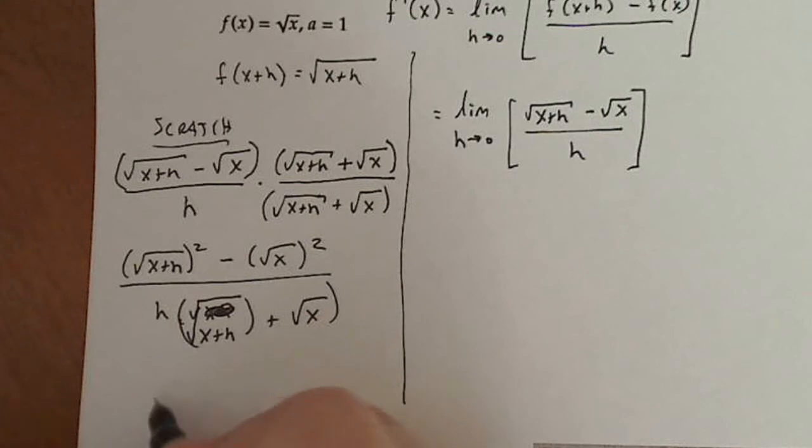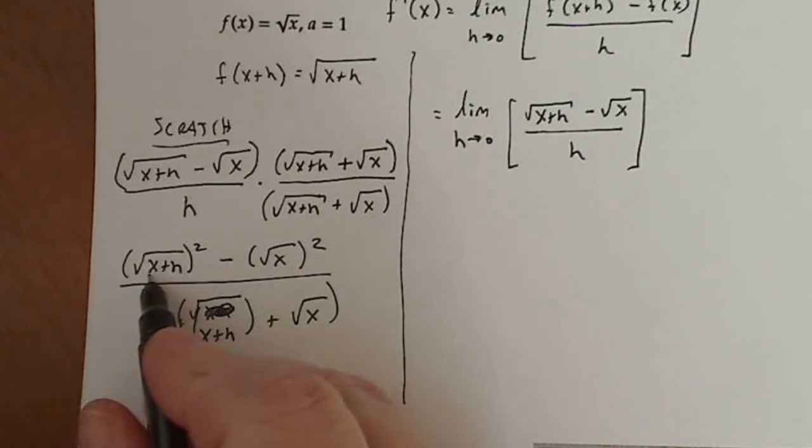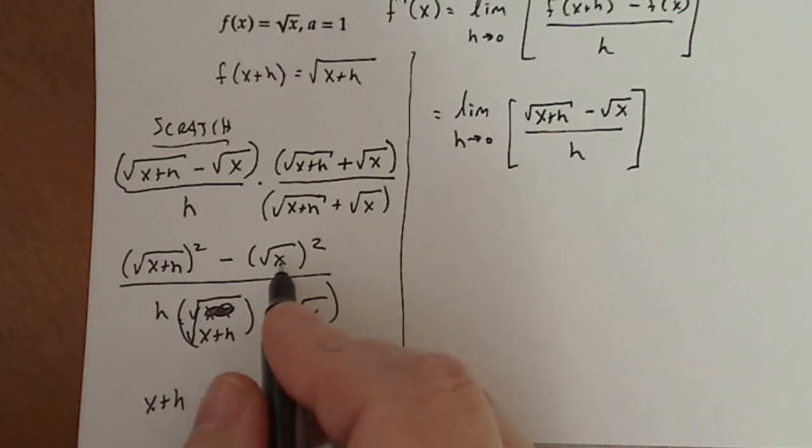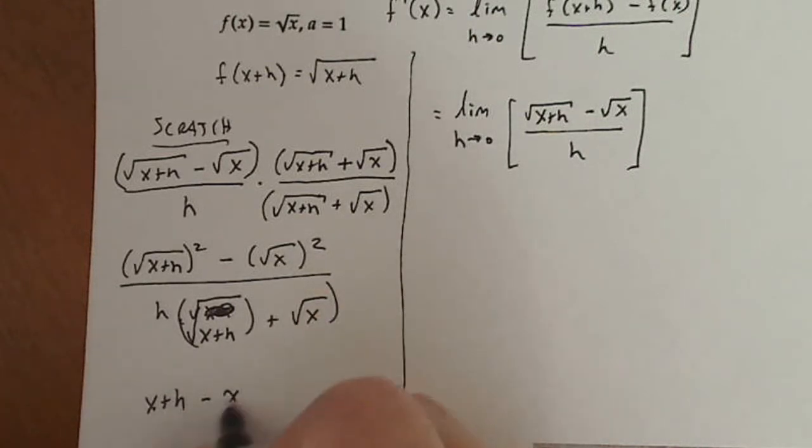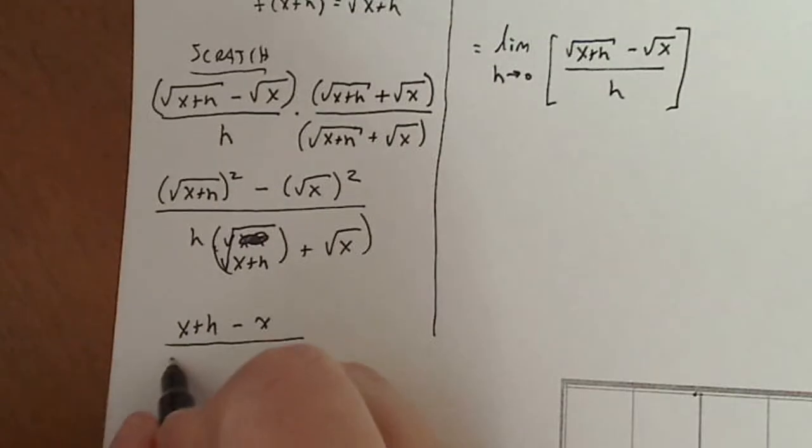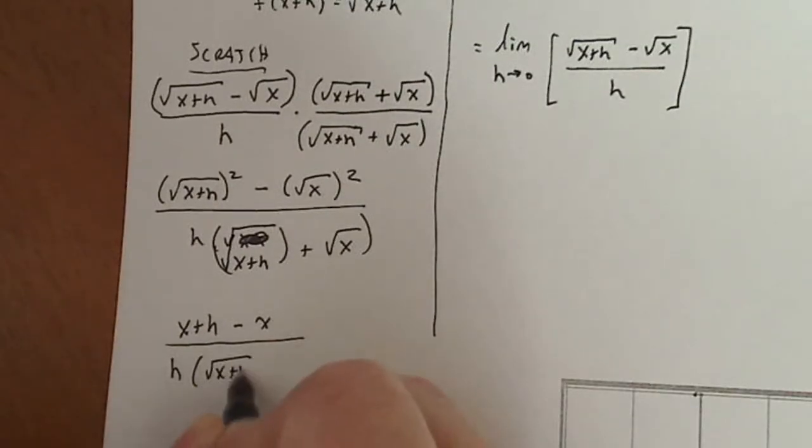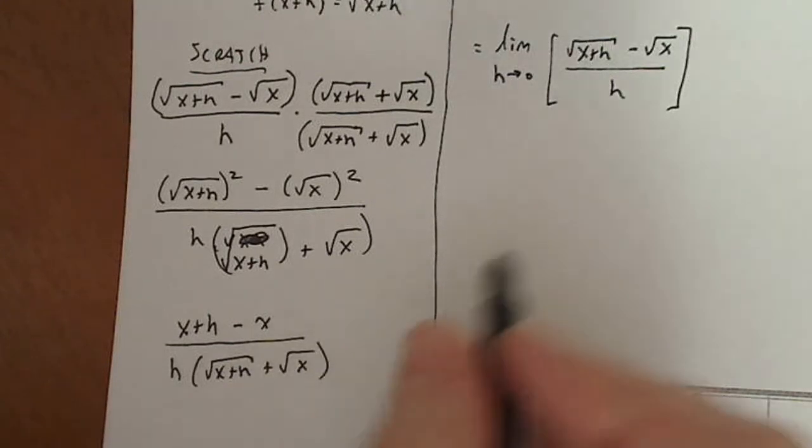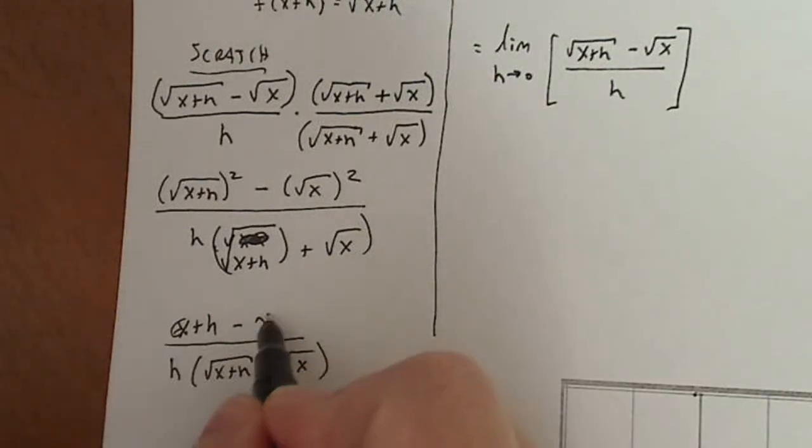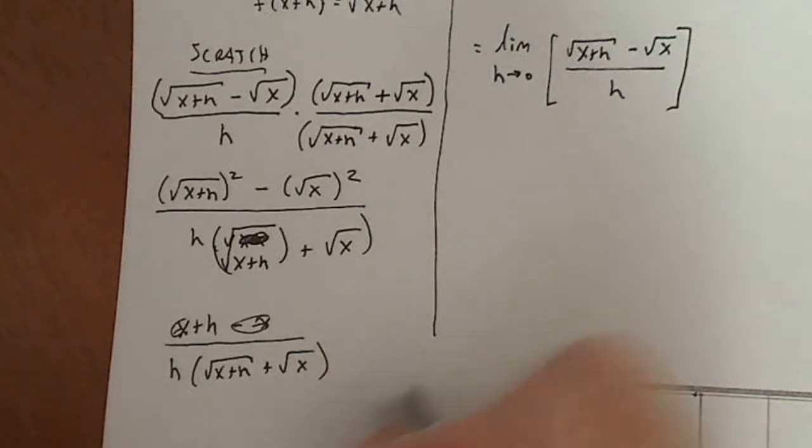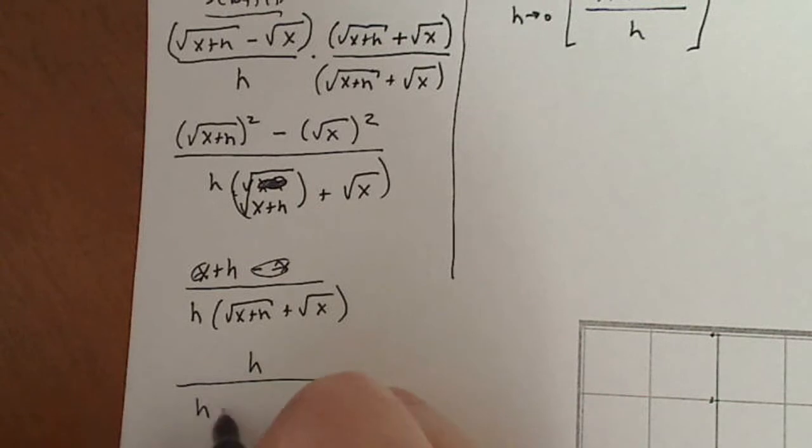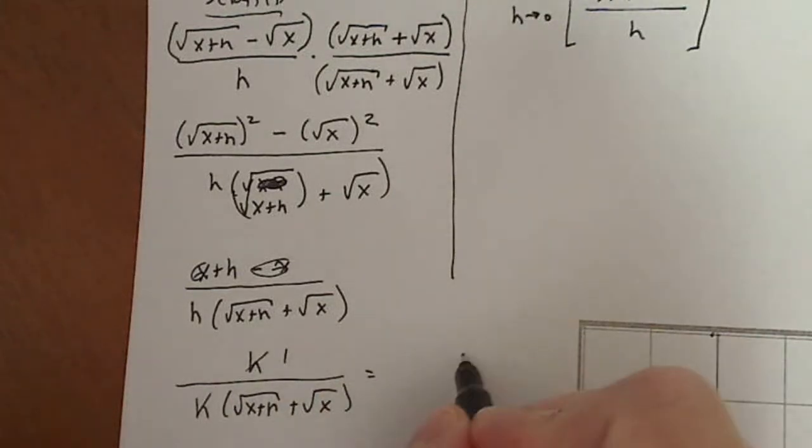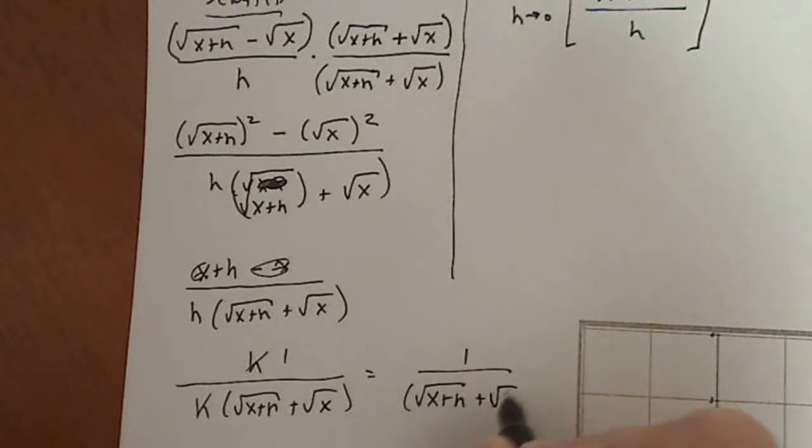Now the numerator will become x plus h because if I square a square root, I just get the inside minus square root of x squared is x divided by h times the square root of x plus h plus the square root of x. In the numerator, the x's go away and I'm left with just h. So that'll be h divided by h square root of x plus h plus square root of x and those h's go.